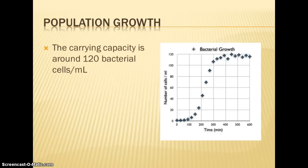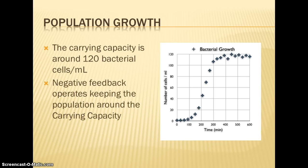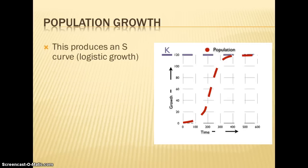Looking at bacteria again, we see the growth rate has decreased and the population has leveled off. The carrying capacity is around 120 bacterial cells — that's the maximum number that particular environment will support. This is negative feedback, which creates stabilization and keeps the population around carrying capacity. This is called the S-curve, or logistic growth. It starts off exponential, speeds up, and then levels off as it reaches K, or carrying capacity.